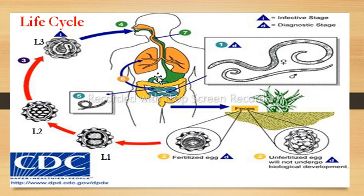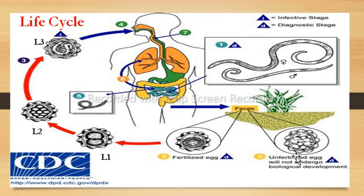The life cycle of Ascaris lumbricoides starts when male and female adult worms mature in the intestine. They lay eggs inside the intestine and release them through feces into the environment. There are fertilized and unfertilized eggs in feces. Unfertilized eggs will not undergo biological development, but fertilized eggs develop to the L1 stage — a non-infectious starting stage — followed by the L2 stage, also non-infectious. Then the L3 stage forms, and embryonated eggs at the L3 stage are ingested by humans.